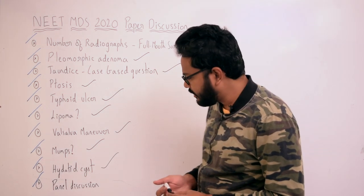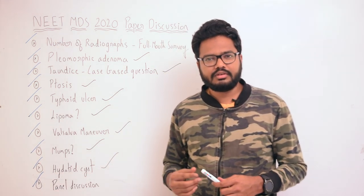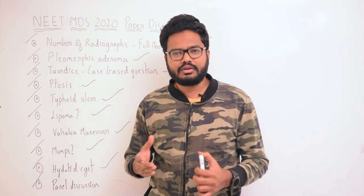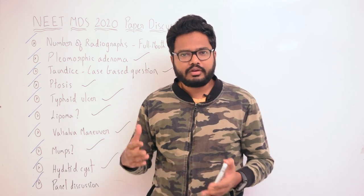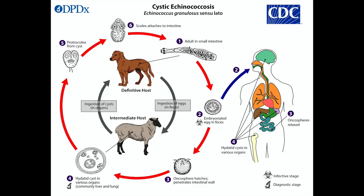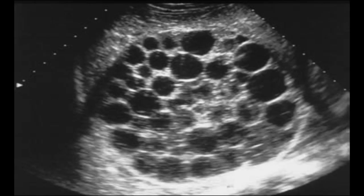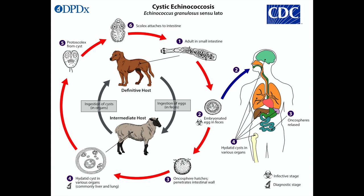Moving on to the next question about a person spending most of their time with dogs — what kind of infection could they be suffering from, given features like swelling in the region of the liver? This relates to hydatid tapeworm. Hydatid cysts appear as encapsulated translucent cysts, and most hydatid cysts affecting humans grow in the liver. The hydatid tapeworm life cycle requires two host animals for its survival.